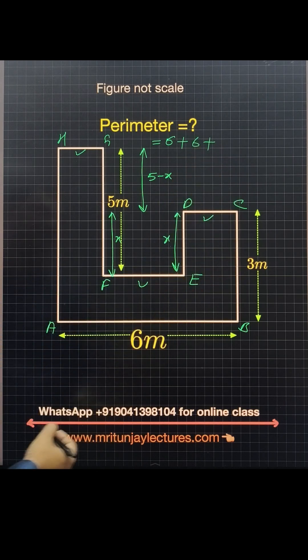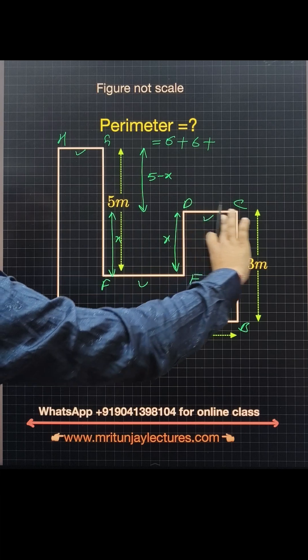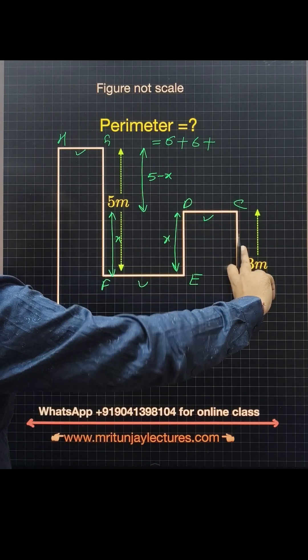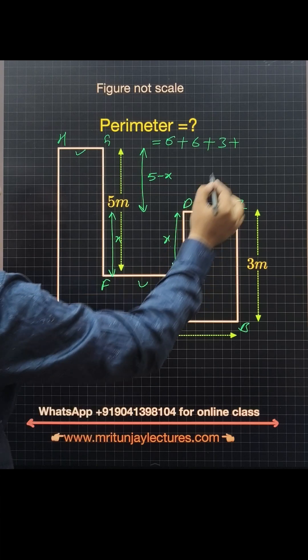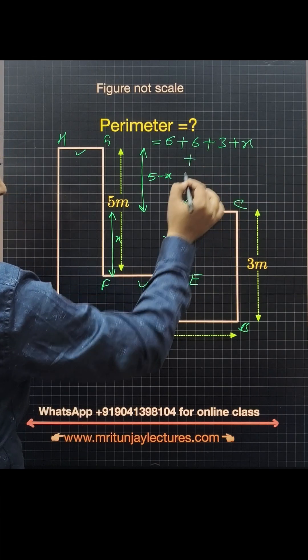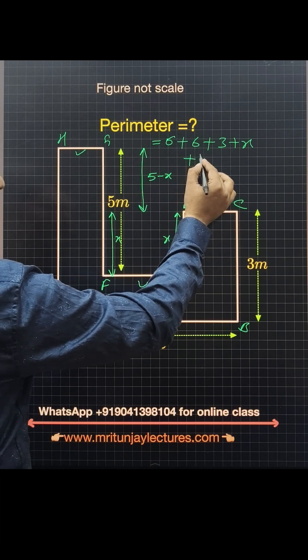Simply 6 plus 6. After that, sum of these distances. That distance is 3, plus that distance x, plus that distance which is simply 5.